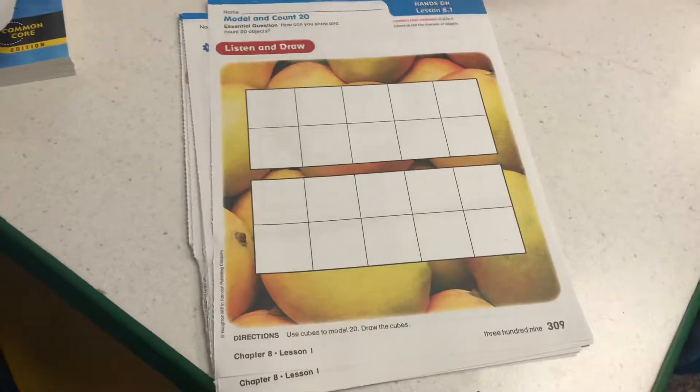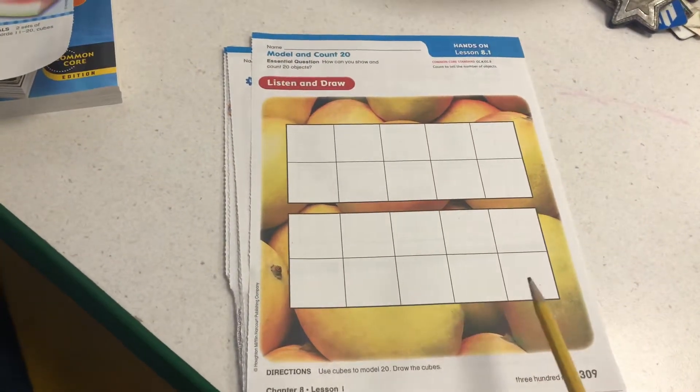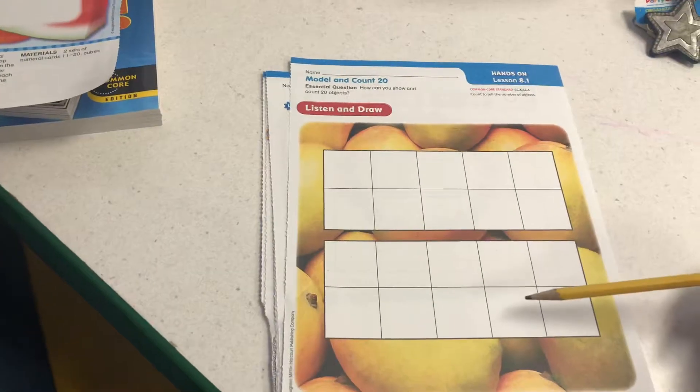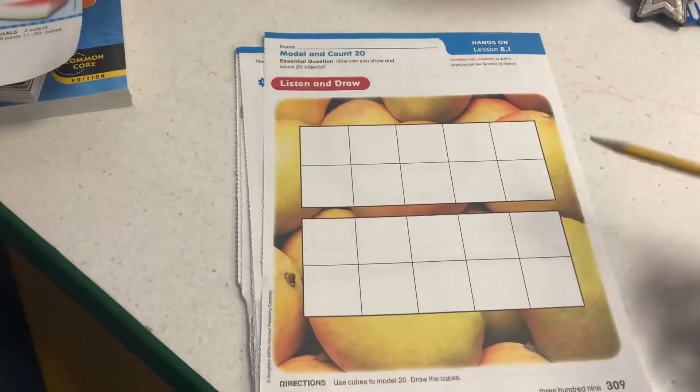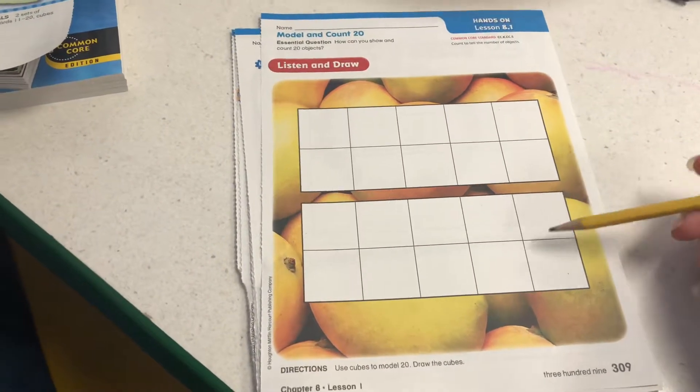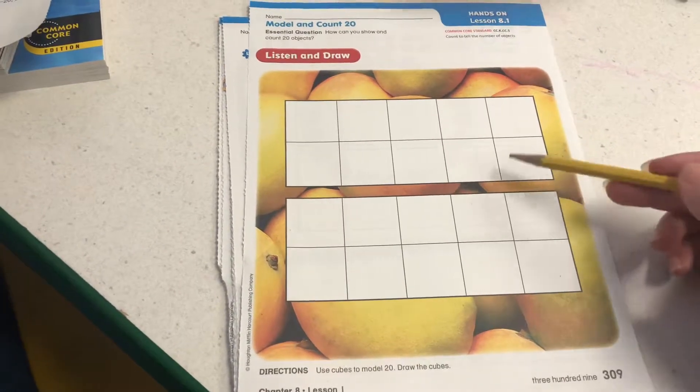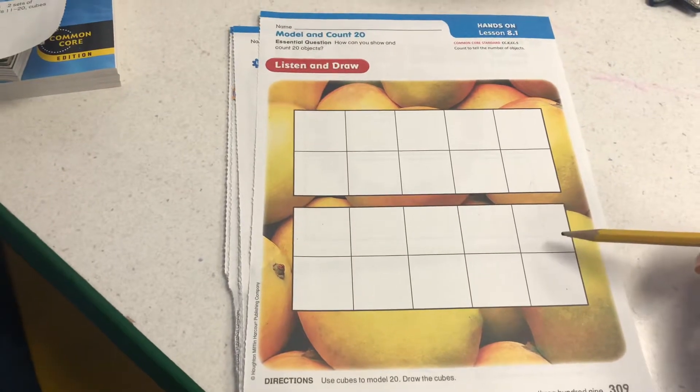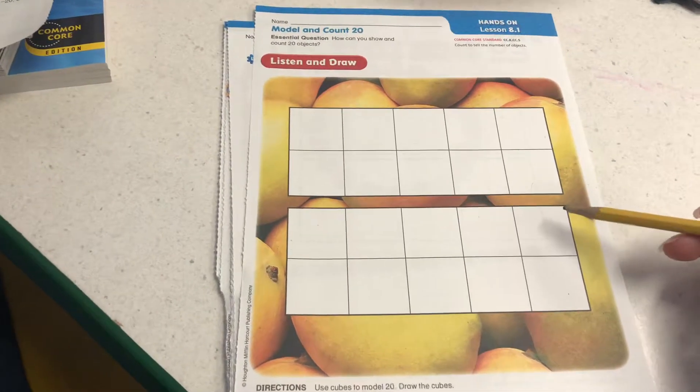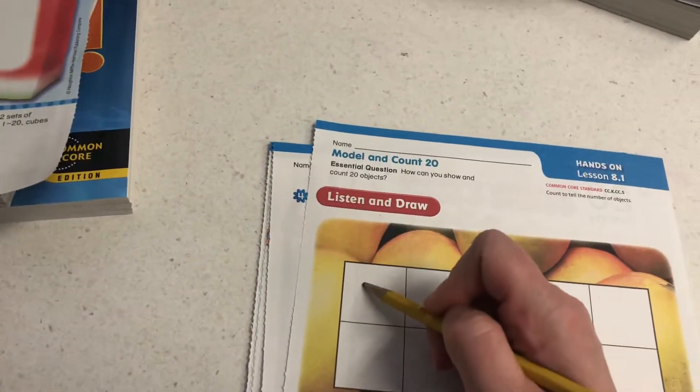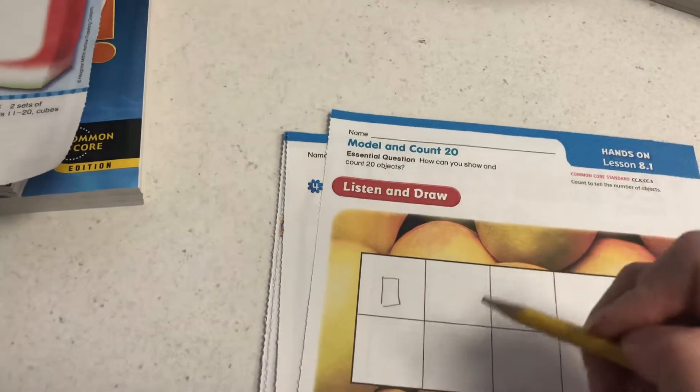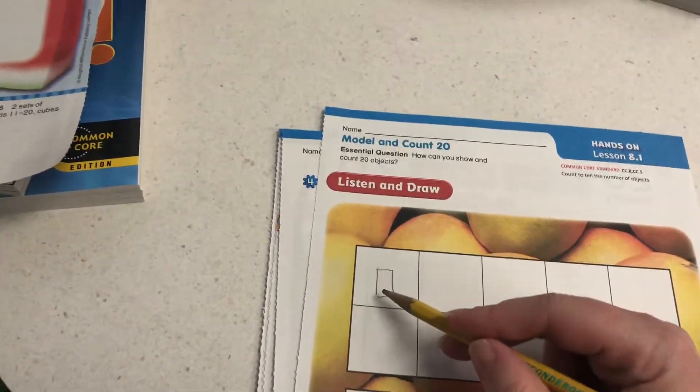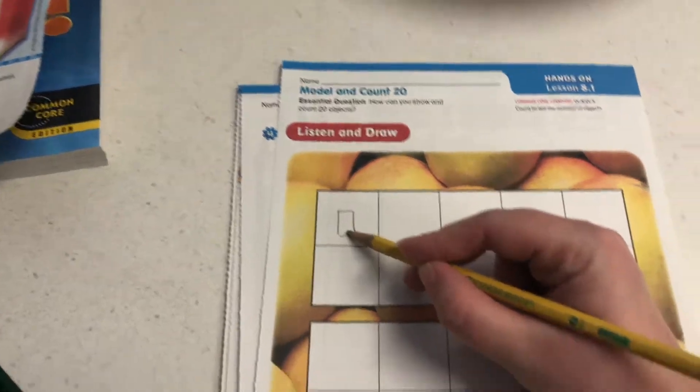We need to figure out how to model 20 using two 10 frames. I know my kiddos have been practicing this almost all year. Two 10 frames, we know right away, make 10. But in case you forgot, what I'm going to do is in each box, I'm going to draw a little square that represents a cube, a quick picture like we always talk about. So as I'm drawing, I'm also going to count.